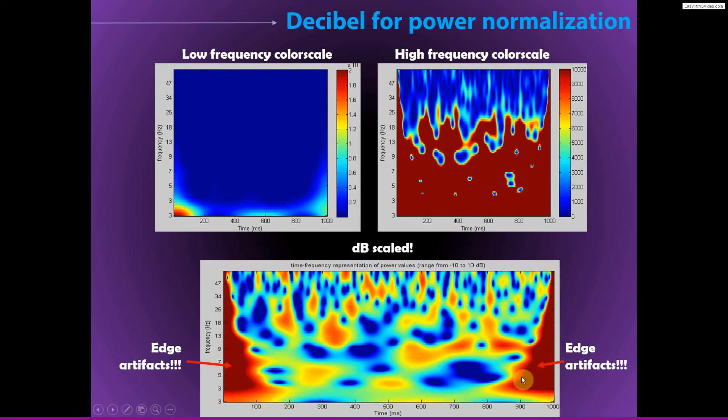Here you can also see, highlighted now in these decibel transformed results, these edge artifacts at the beginning and at the end. And so, of course, you always want to cut your data epochs to be large enough, to be wide enough, to have the edge artifacts be safely out of the way from any activity periods, any time periods that you'll be interested in.